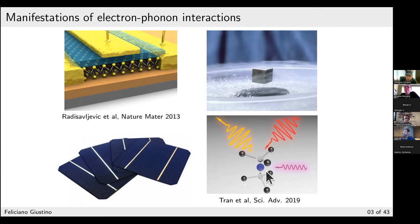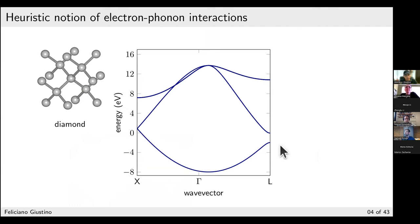You also see electron-phonon interactions in the photophysics of quantum materials and defects used for quantum information. This rendering shows a germanium vacancy defect in diamond. When you shine light at a certain frequency, the system re-emits light at a lower frequency — the frequency difference is called the Stokes shift, and it relates directly to electron-phonon interactions. All of these phenomena can be studied today through a unified theory based on density functional theory and many-body perturbation theory.